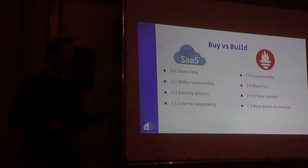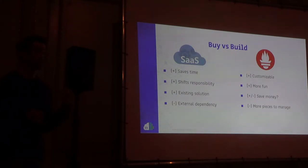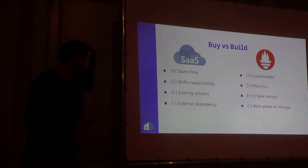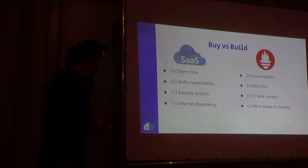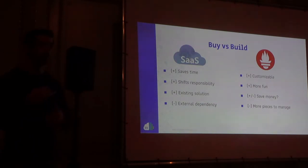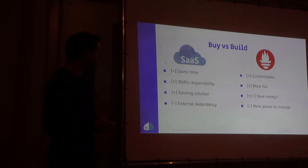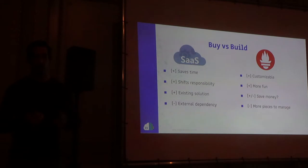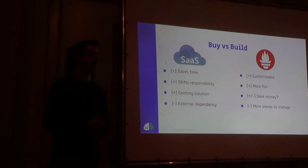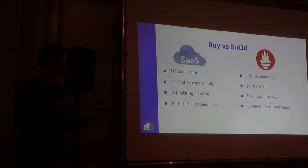If you look at the real pros and cons on each side — and it depends on your actual setup and needs — going with an existing SaaS solution saves a lot of time because it's already up and running, and shifts the responsibility of running it to another company. On the other hand, it is another external dependency. If they change something or jack up the price, you're tied to it. If you build your own solution, you get a lot more customizability. Saving money is arguable — you're not paying the SaaS cost, but you're spending developer hours, which can be a lot more expensive. And it's more pieces to manage.